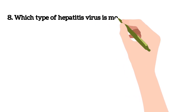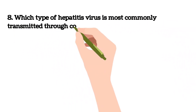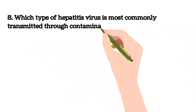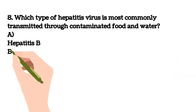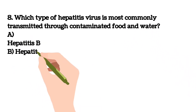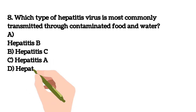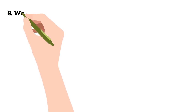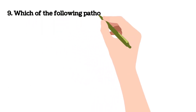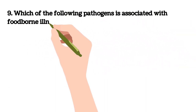Eighth question: which type of hepatitis virus is most commonly transmitted through contaminated food and water? A) Hepatitis B, B) Hepatitis C, C) Hepatitis A, D) Hepatitis E. The answer is C) Hepatitis A.